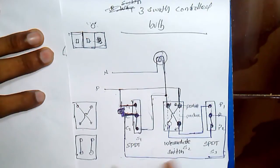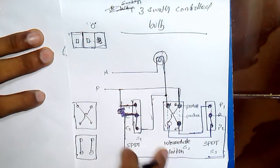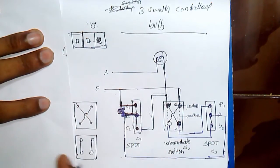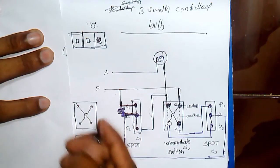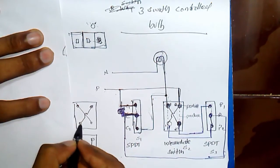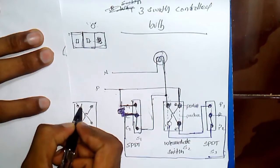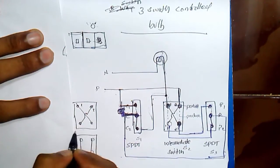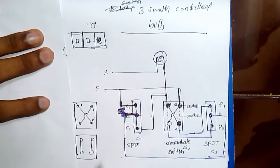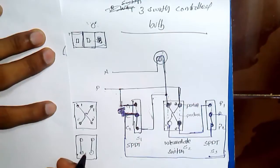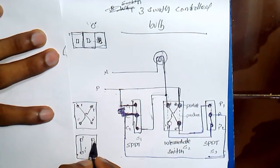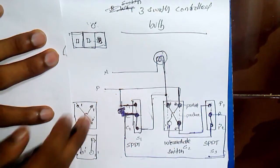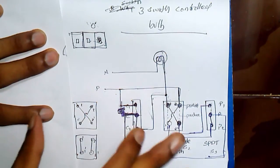The circuit uses SPDT switches and one intermediate switch. The working of the intermediate switch: in the first position, we have contacts like one–two and one-dash–two-dash. In the second position, we have one–one-dash contact and two–two-dash contact. This is the intermediate switch and how it works.